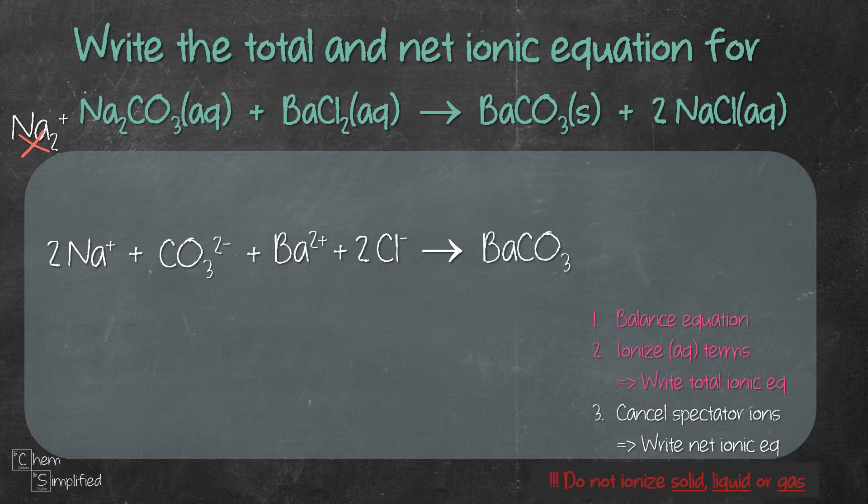And then we move on to the final one, which is 2 NaCl. So NaCl is going to split to give us Na+ and Cl-. And because we have that 2 in front of NaCl, we need to place 2 in front of Na+ and Cl- as well. At this point, we have written the total ionic equation.